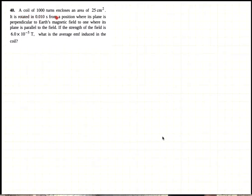This problem says a coil of a thousand turns encloses an area of 25 centimeters squared. It is rotated in a hundredth of a second from a position where its plane is perpendicular to the Earth's magnetic field to where its plane is parallel to the field.